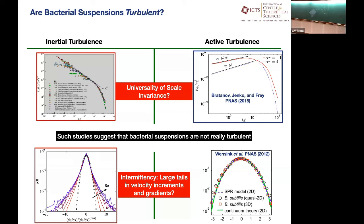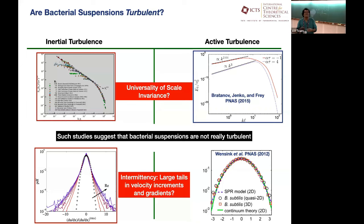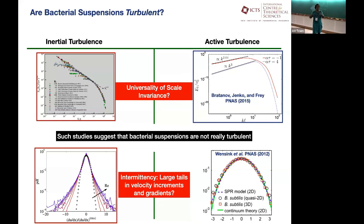Is intermittency a consequence of scale invariance? No. The origin of intermittency is still shrouded in mystery. It's probably related to questions in high Reynolds number flows interlinked with finite-time singularities. Is there a microscopic theory about why turbulence is intermittent? The short answer is no.